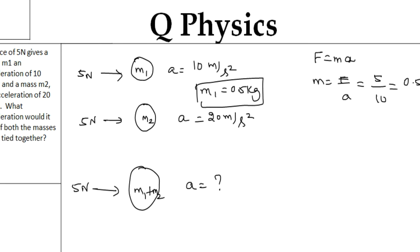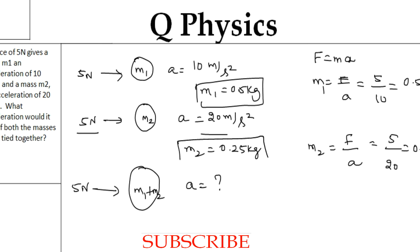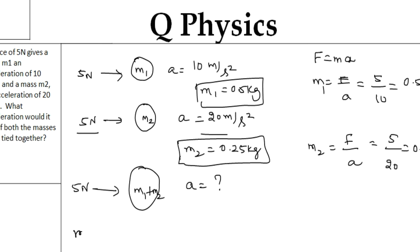Similarly, to find m2: m2 = F divided by A = 5 newtons divided by 20 m/s², which gives 0.25 kilograms. Adding the two masses, m1 + m2 = 0.5 + 0.25 = 0.75 kilograms. So the total mass of the combined system is 0.75 kilograms.